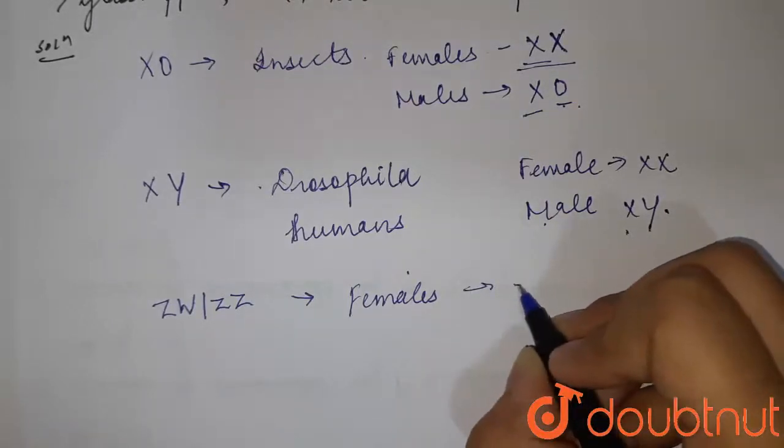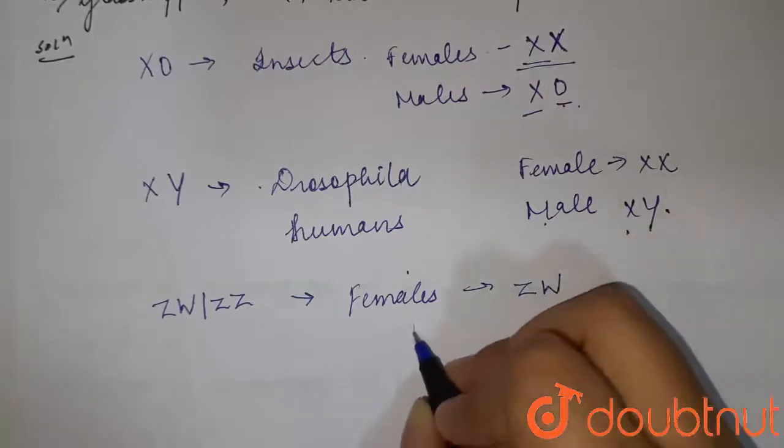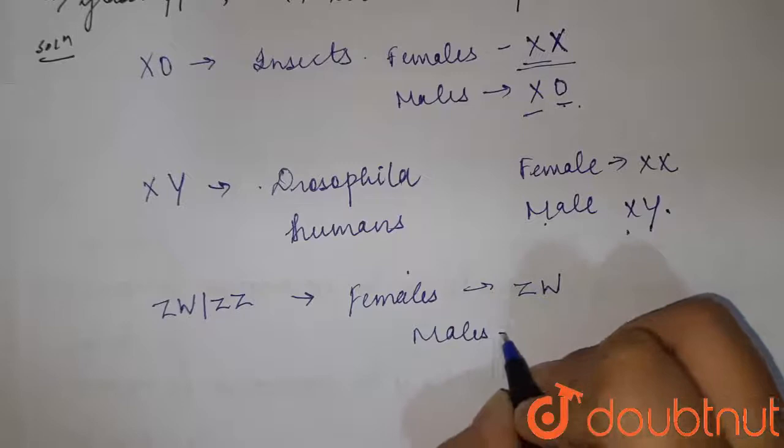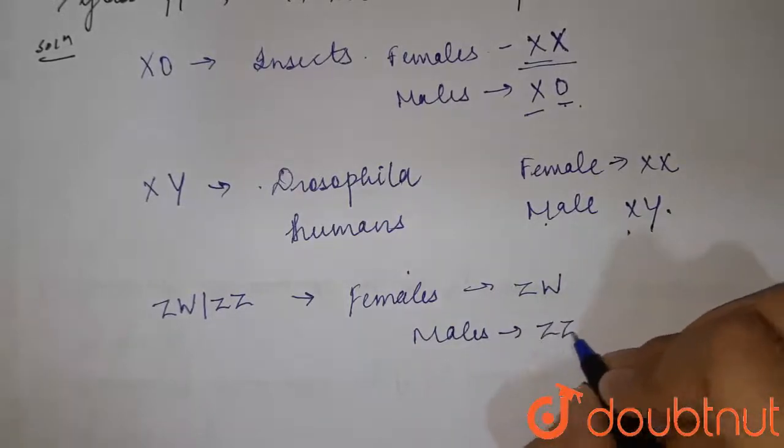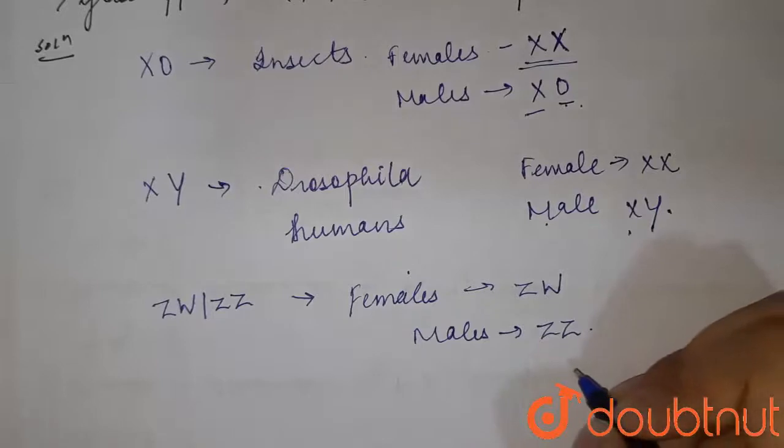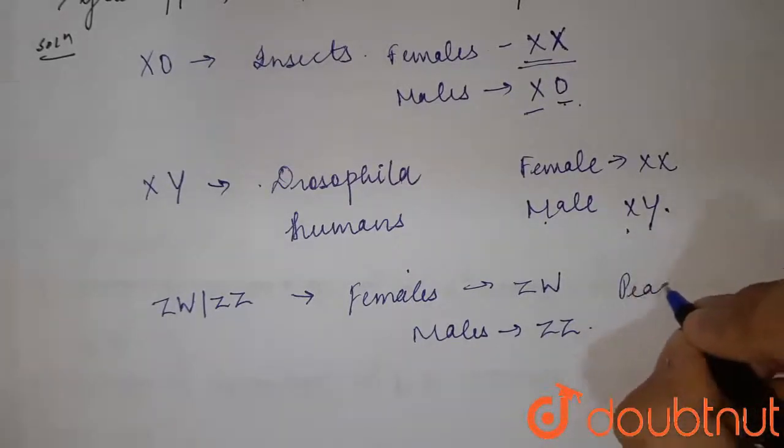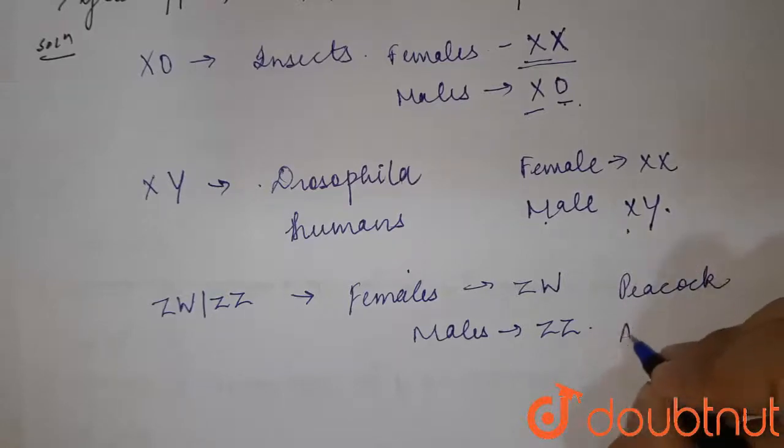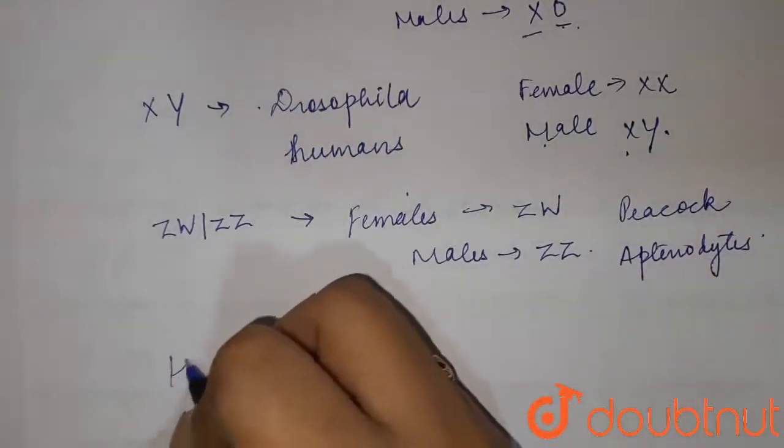Which means ZW, and the males have homomorphic sex chromosomes, which are ZZ. This is seen in peacock, Aptenodytes, and is generally seen in most birds.